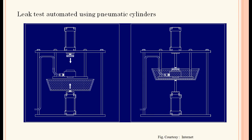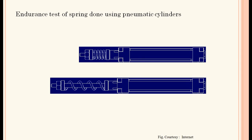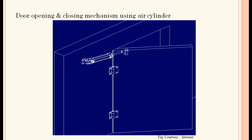A leak test automated using pneumatic cylinders: by using two pneumatic cylinders, the first cylinder clamps the component onto the platform, then the second cylinder extends to submerge that component in a water tank and the leak test is performed. Then endurance test of a spring done using pneumatic cylinders — the spring is mounted and pneumatic cylinders carry out the endurance test. Door opening and closing mechanism using a cylinder is also shown.